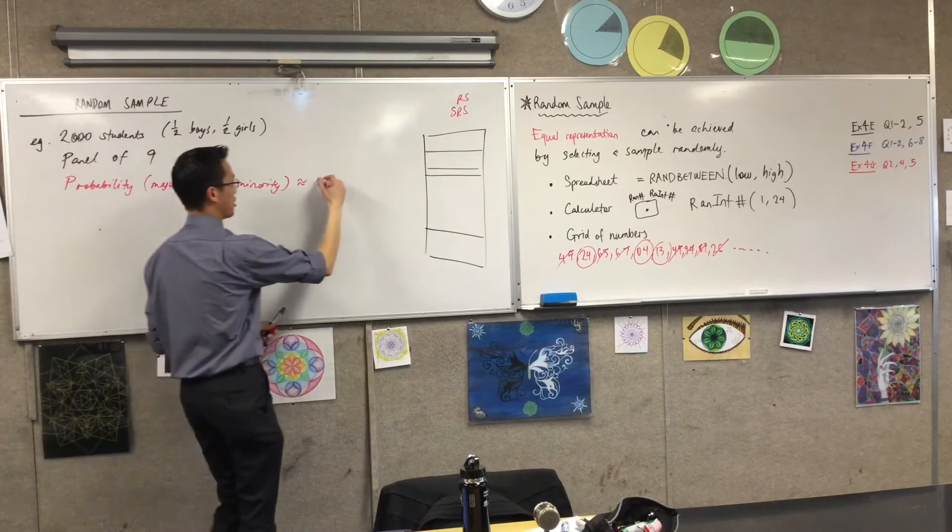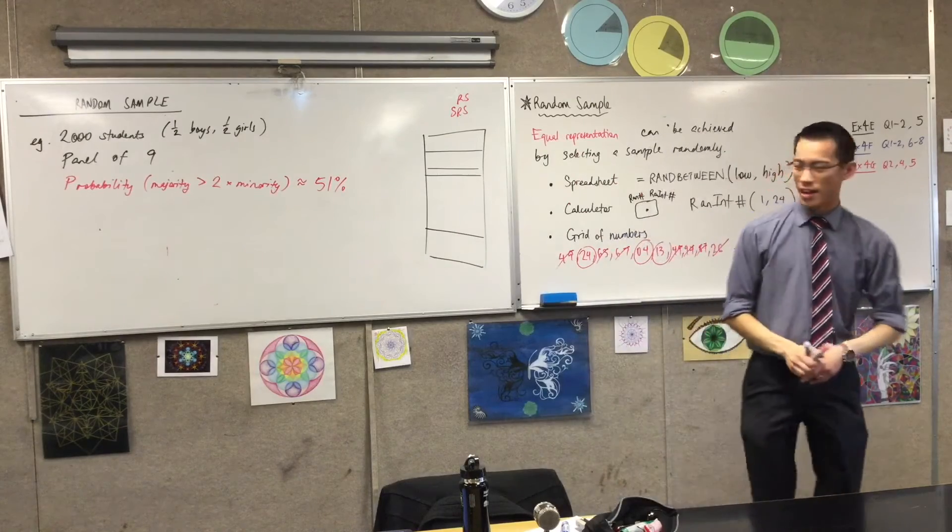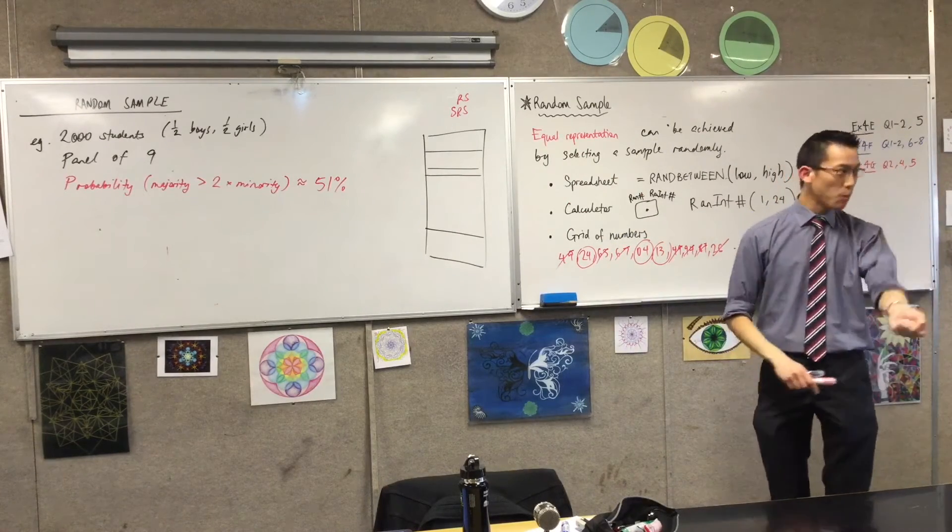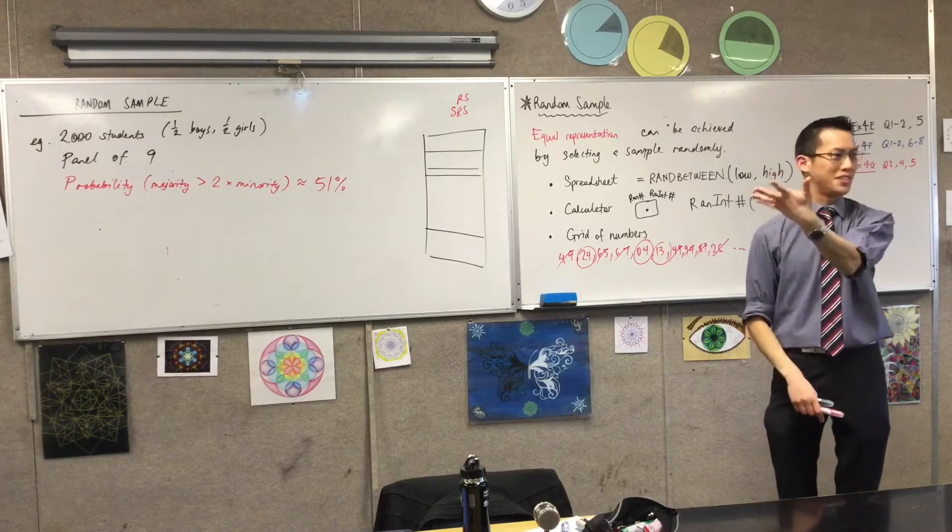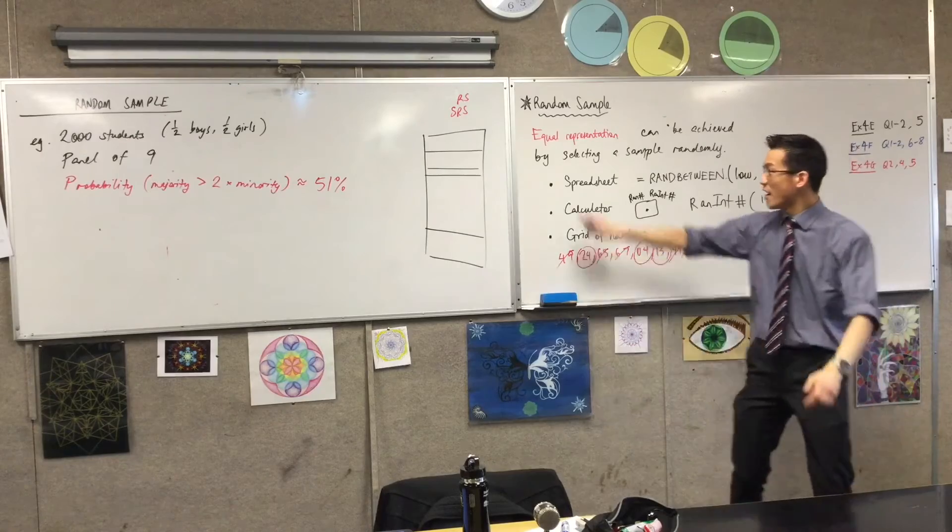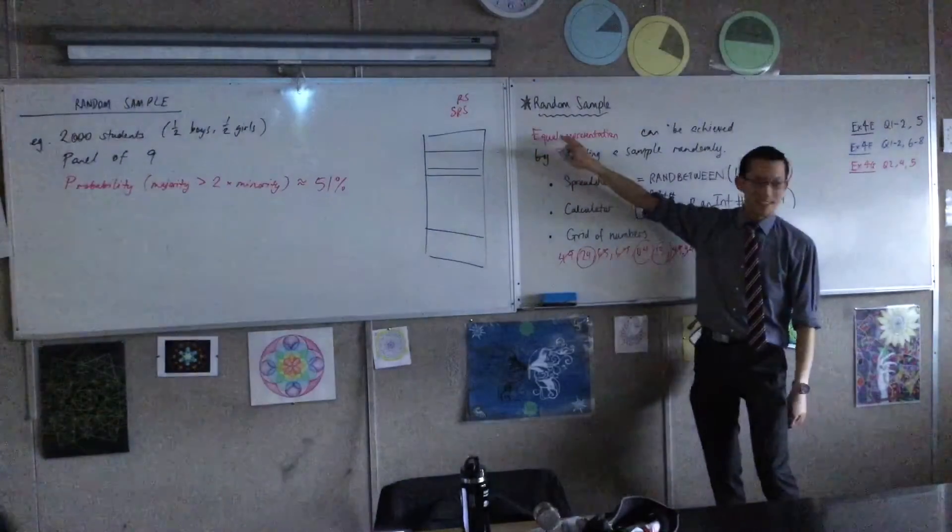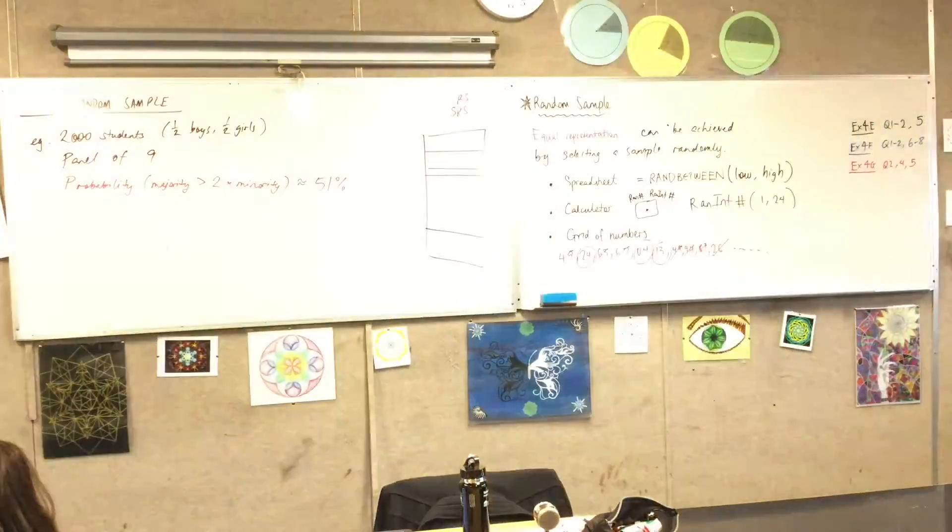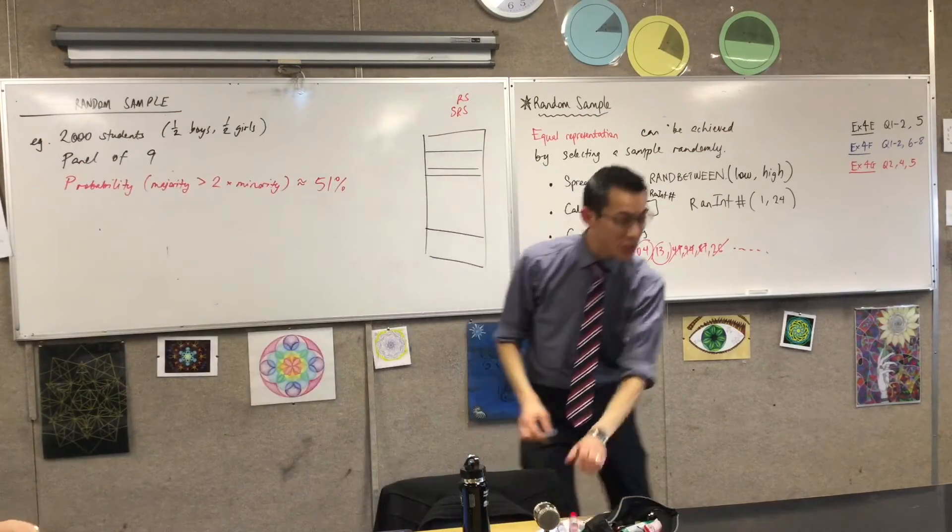I'm going to tell you what the number is. Because I went and crunched it. It's 51%. There's a 51% chance that the boys will be double or more than the girls or the girls will be double or more than the boys. In other words, it's kind of made a mockery of this equal representation idea. So, to solve this problem...